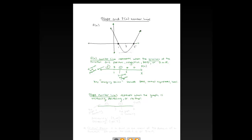I'll draw the slope number line with arrows on both ends, put x below for x-values, and label it 'slope.' Reading the graph from left to right, the graph is decreasing all the way until x = 3, so I'll put 3 on the number line. To the left of 3, I'll mark a negative — but note that in a slope number line, the negative sign means the graph is decreasing there, which is completely different from what it means in an f(x) number line.